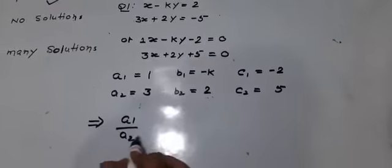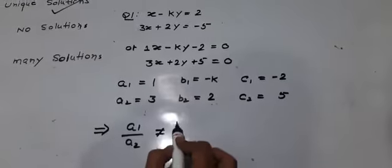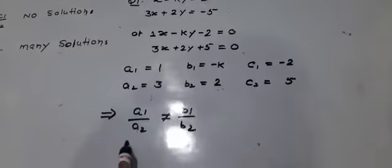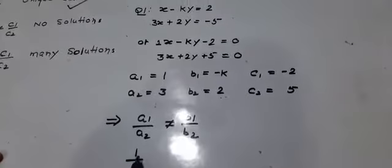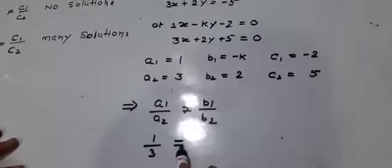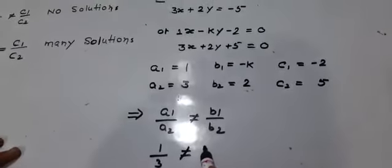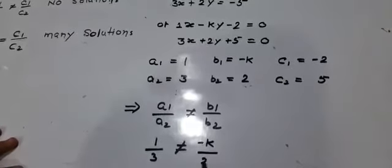Then, a1 upon a2 not equal to b1 upon b2. So 1 upon 3 not equal to minus k upon 2.